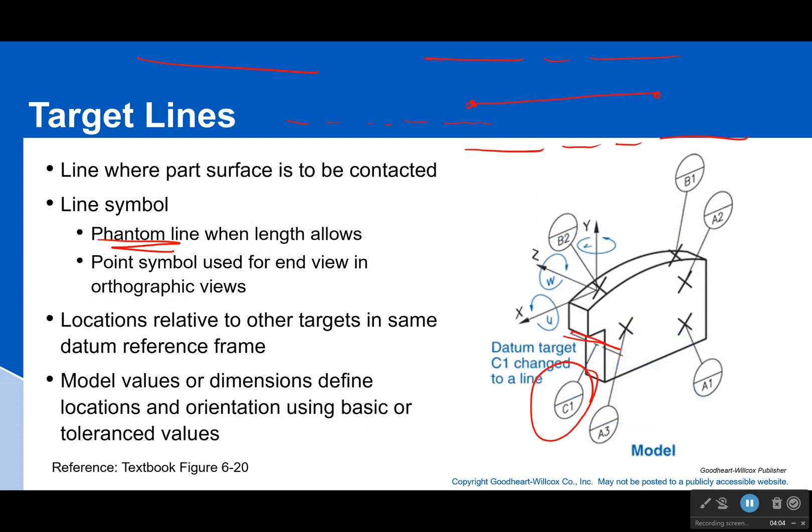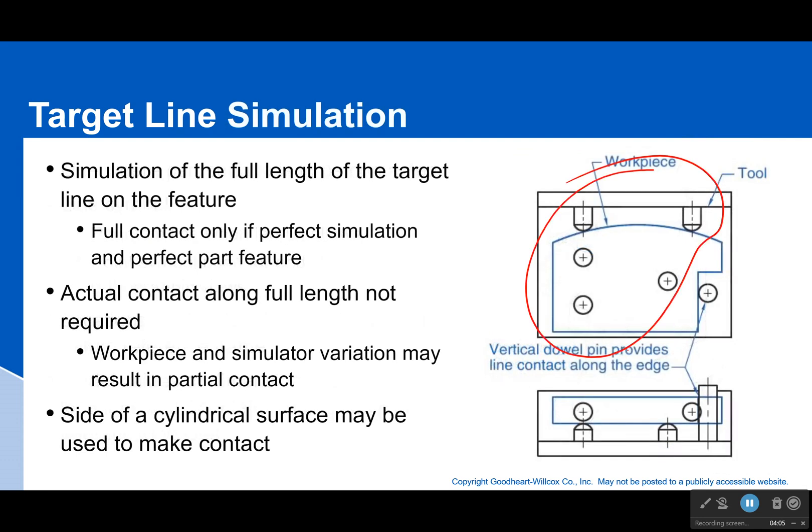There's our line datum right there, and a line is usually created with a cylinder. It's just a simple cylinder. You're not having to make some perfect wedge that touches at only one point—a cylinder will do that too, because only the tangent line will actually touch the surface. Now there's only full contact if it's a perfect simulation and a perfect part feature. So that doesn't happen all the time, but hopefully you're going to contact enough to constrain it in the way that it's supposed to.